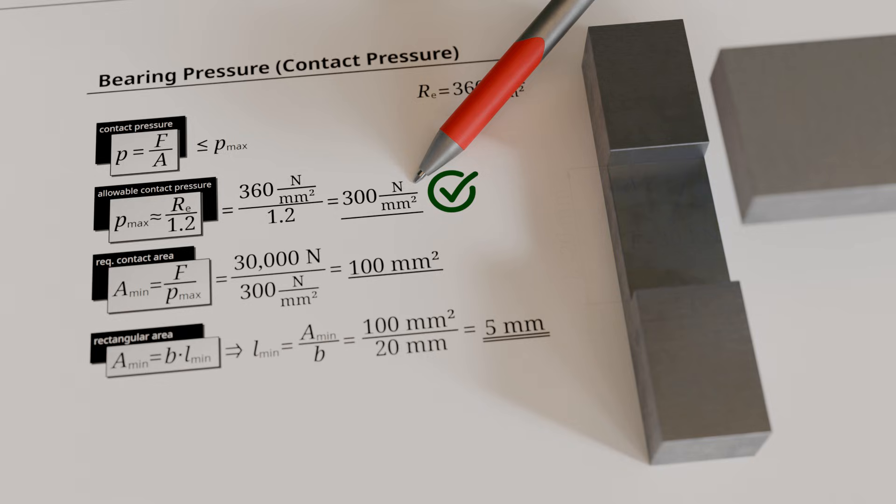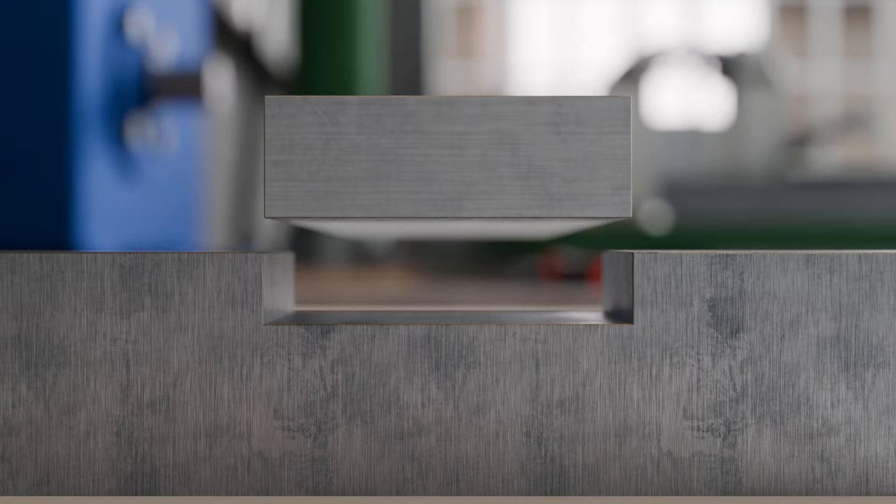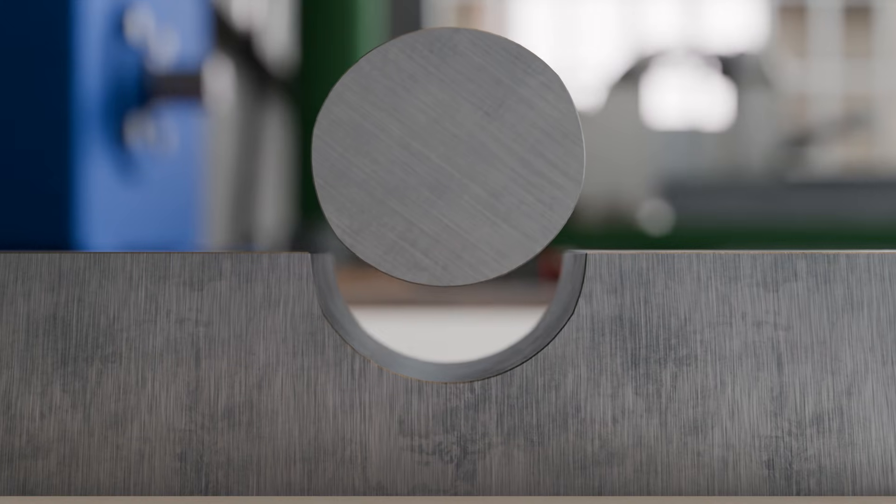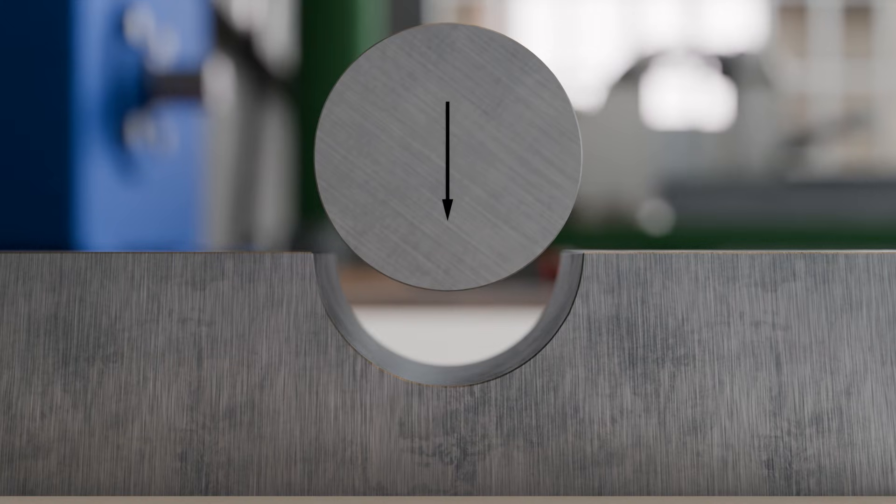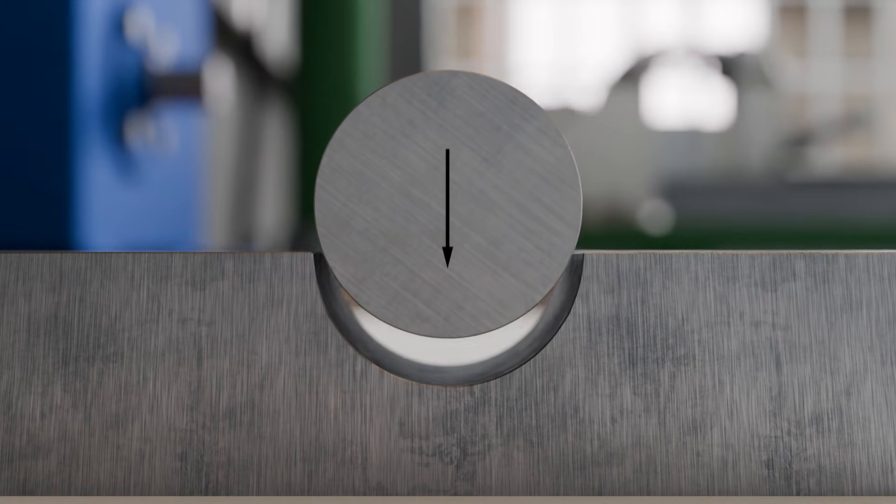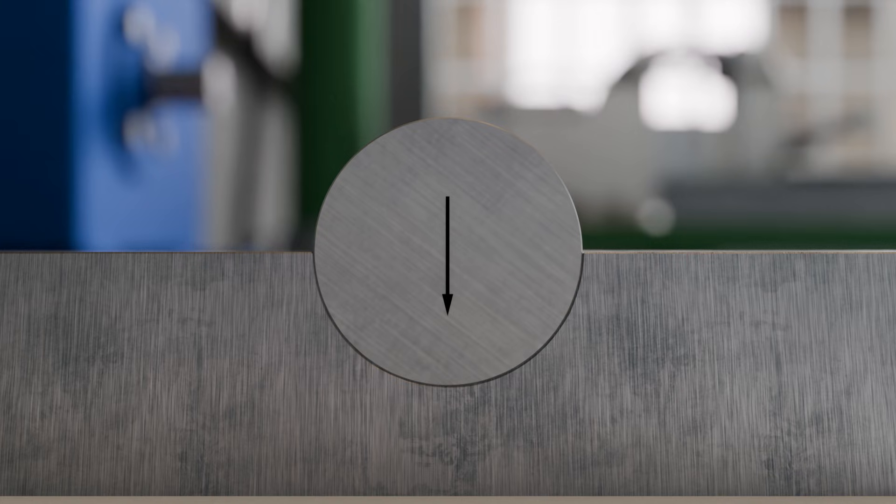Now let us consider the case in which the contact surface is not flat, but curved. This occurs, for example, when a pin is placed in a bore and is subjected to a force. Although the force is distributed along a curved surface section, this curved surface is not relevant for determining the bearing pressure as the ratio of force to area.